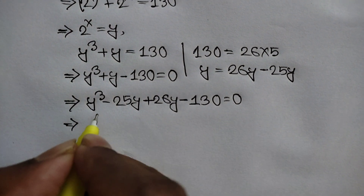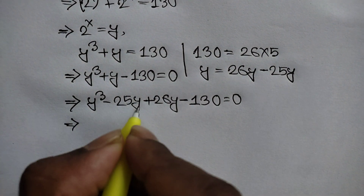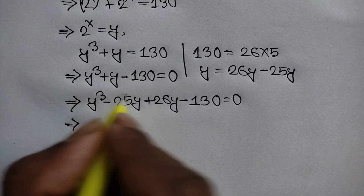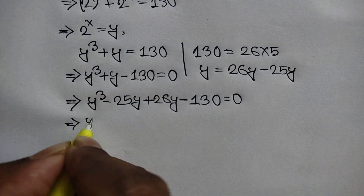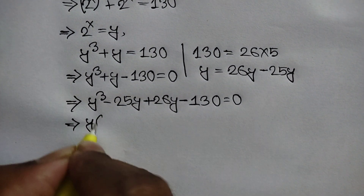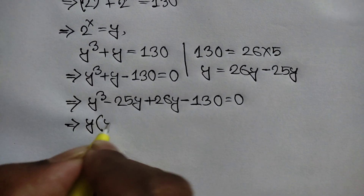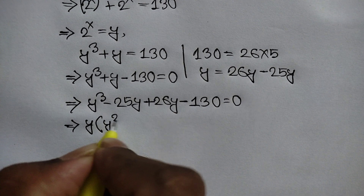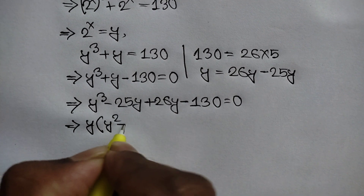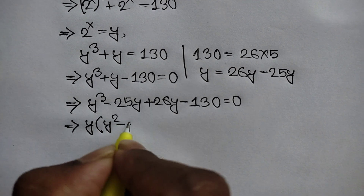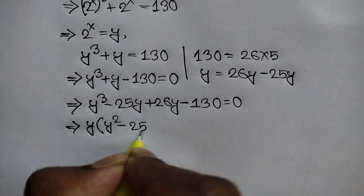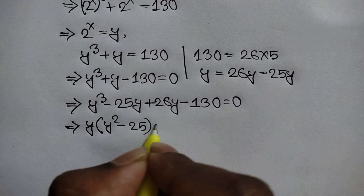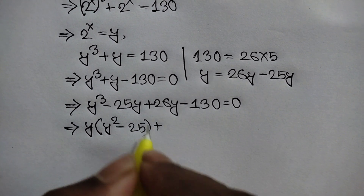Taking y common from the first two terms, we get y times (y squared minus 25), and then grouping the remaining terms with 26.